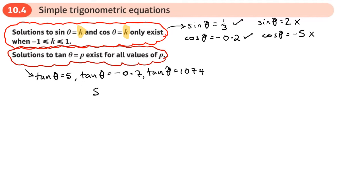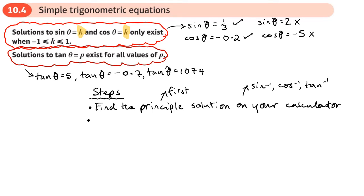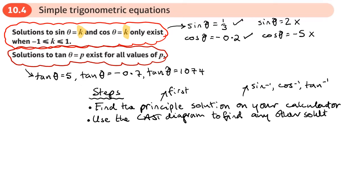The way that we solve these trig equations: the first thing we need to do is find what we call the principal solution on our calculator — that just basically means the first solution. We do that using sine inverse, cosine inverse, or tan inverse. After that we use the CAST diagram to find any other solutions.